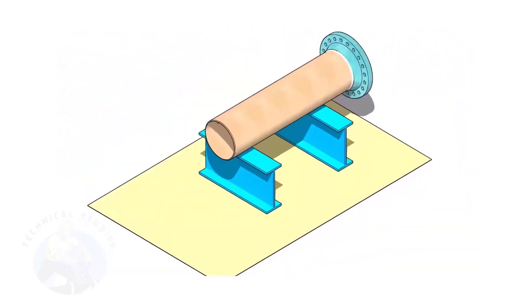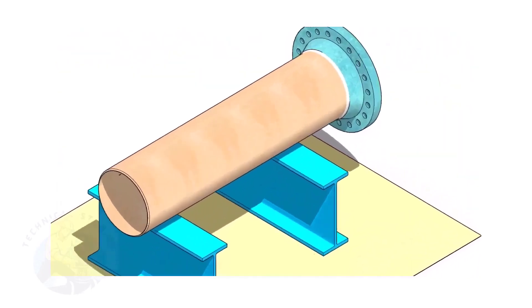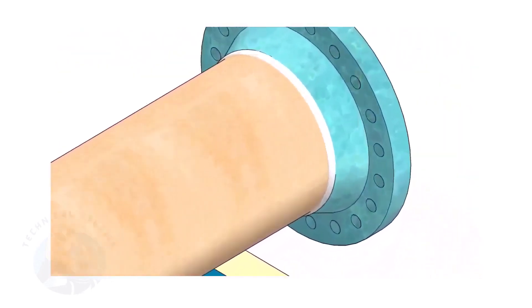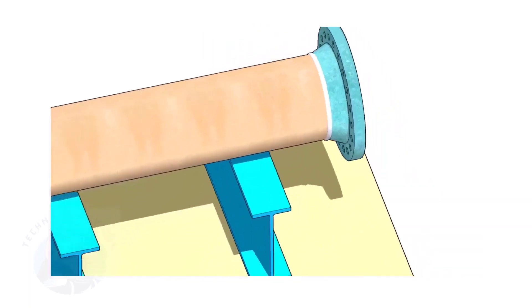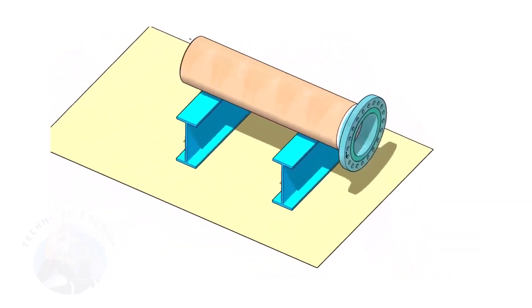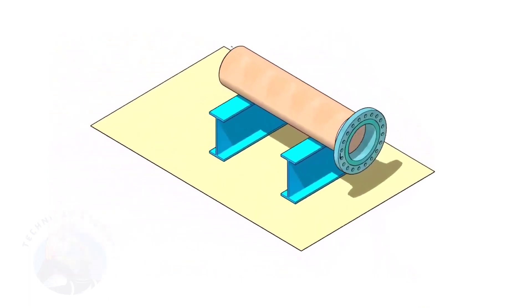Assume that the flange is welded to the pipe. Put the spool on suitable supports. Correct the plumbness of the flange.